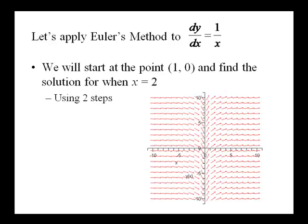We're going to do this using two steps, and then we're going to do it again using five steps. Here is our solution curve that has the initial value of (1,0). So, let's take a look at how we'll perform Euler's method.